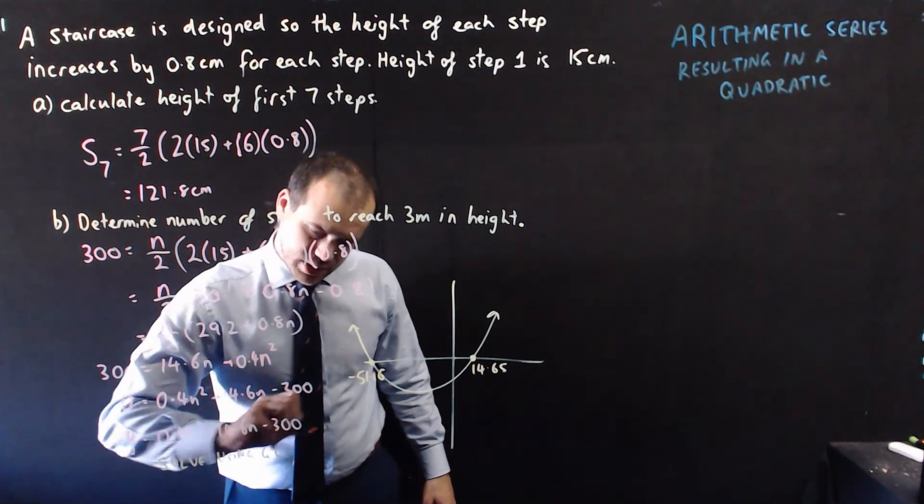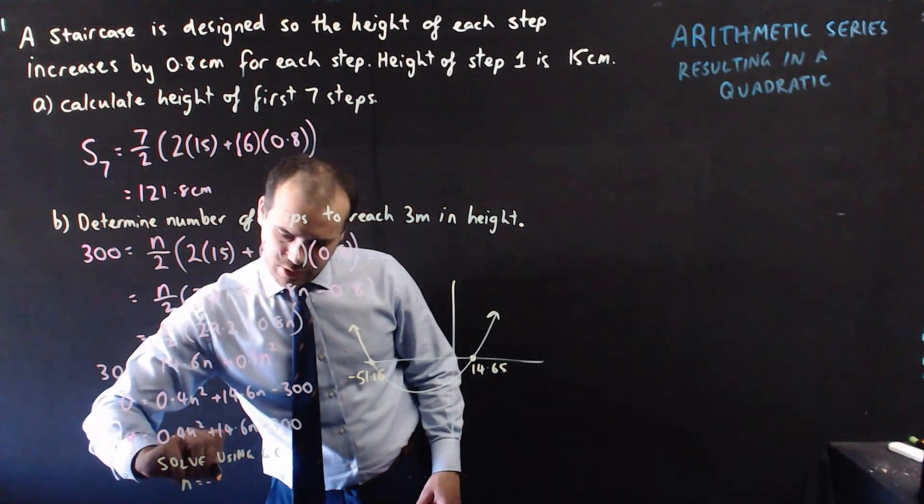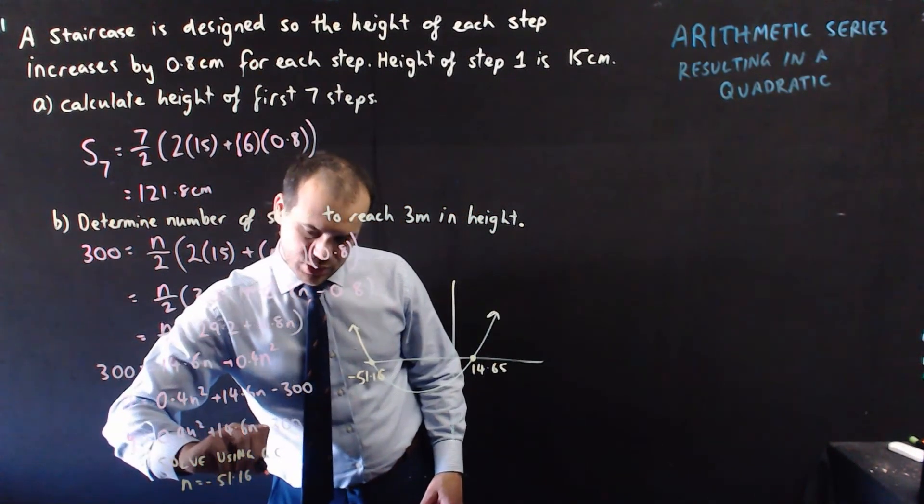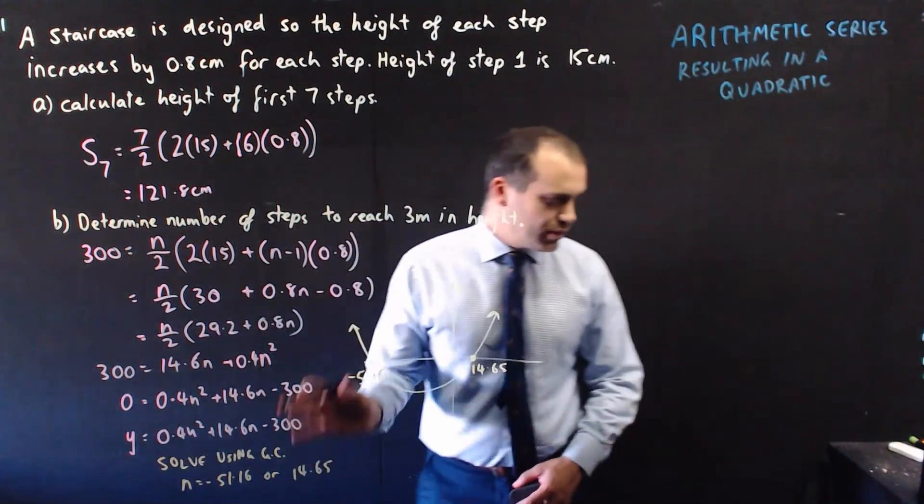g, c, and we get two answers, n equals negative 51.16, or, 14.65, and of course,